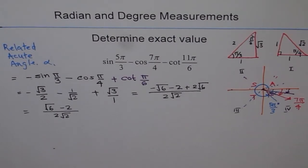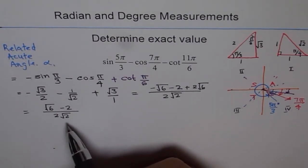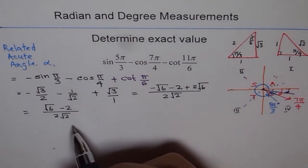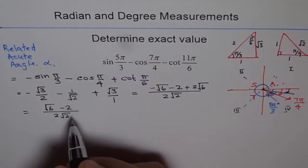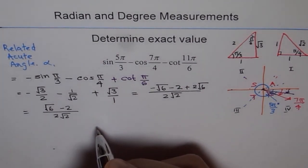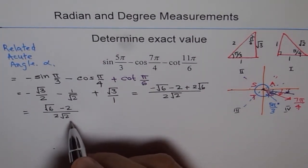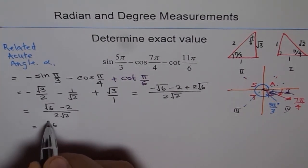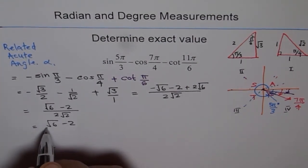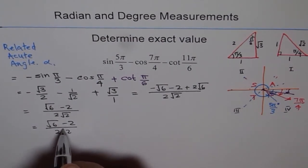Now, many times we don't need square root 2 in the denominator. So in that case, we may like to change it, so rationalize it. So that may or may not be required, but let me rationalize and show you here. So to rationalize means this. That is, we have square root 6 minus 2 divided by 2 times square root 2.